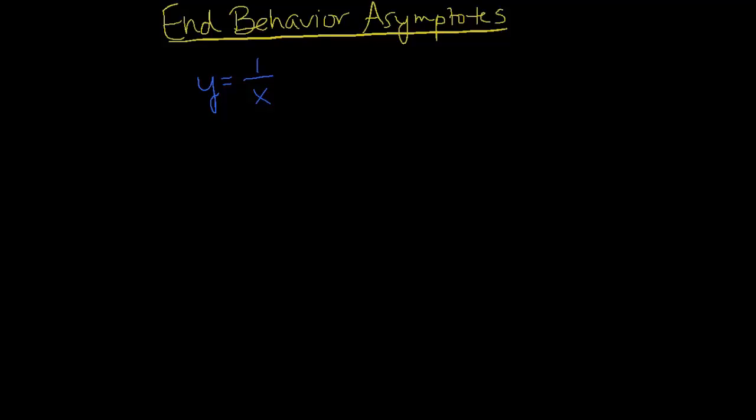Hi. In this video, we're going to talk about end behavior asymptotes and how you're going to find them if they're not as simple as this example right here, 1 over x.